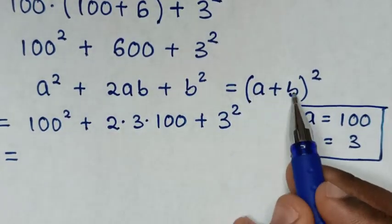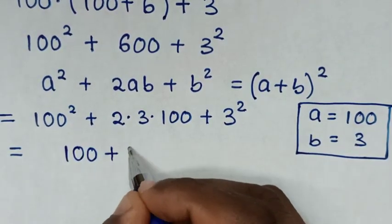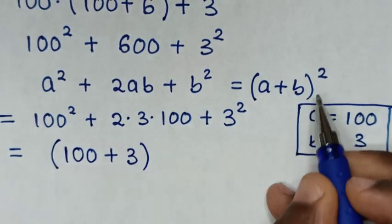So a plus b is this plus this, so it will be (100 plus 3) bracket then squared.